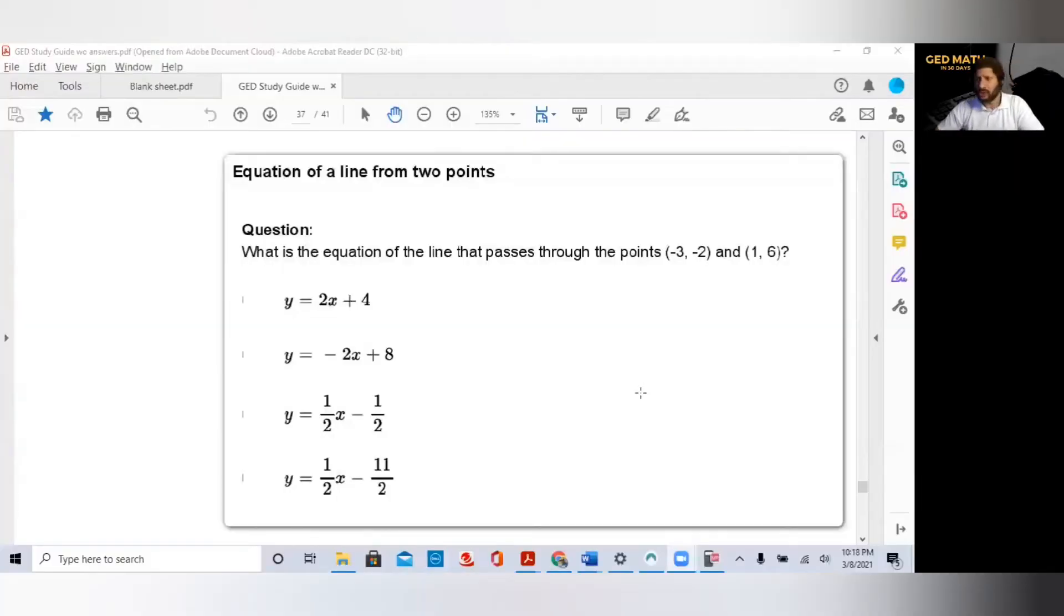On your screen, you'll see a question from the GED study guide provided by GED.com. It's one of the best guides to use to have you prepared. What is the equation of the line that passes through the points (-3, -2) and (1, 6)? I'm going to show you how to do this by hand, but I'm also going to show you how to use the calculator.